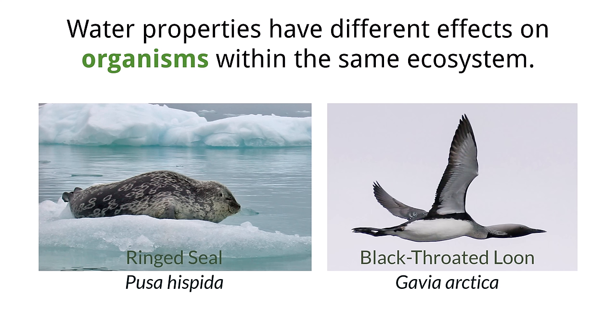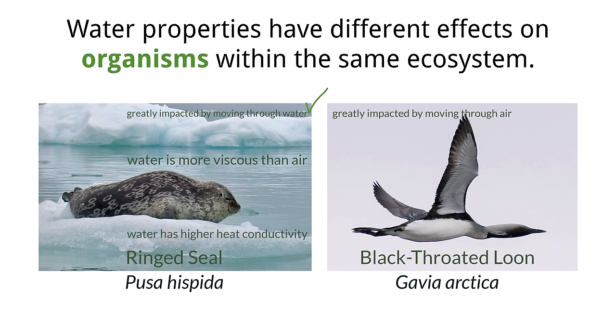They both find food in the water, but the seal spends more time in the water diving to greater depths while hunting. Due to this reason, the physical properties of the water have a greater impact on the seal. The water is more viscous to move through compared to the air, so the seal spends more energy moving throughout the water and fighting against buoyancy forces than the loon does flying through the air. In addition, the water has a higher heat conductivity than the air, so the seal will have more heat pulled from its body faster than the loon in the air. Adaptations for the seal, like the thick coat of fur, help it retain its body heat so it can regulate its temperature under the cold water. Be sure to know these comparisons for the test and also think about how they can apply to other organisms that you learn about throughout the curriculum.